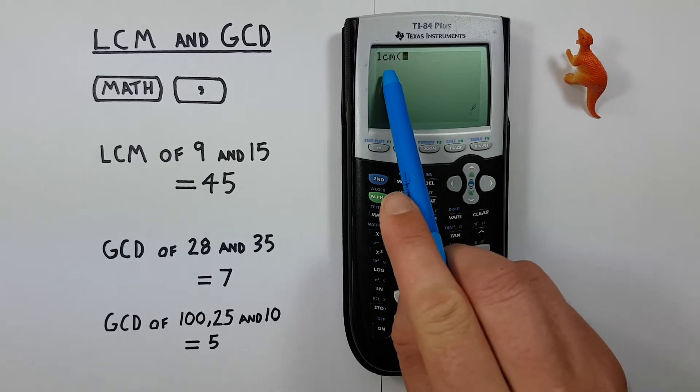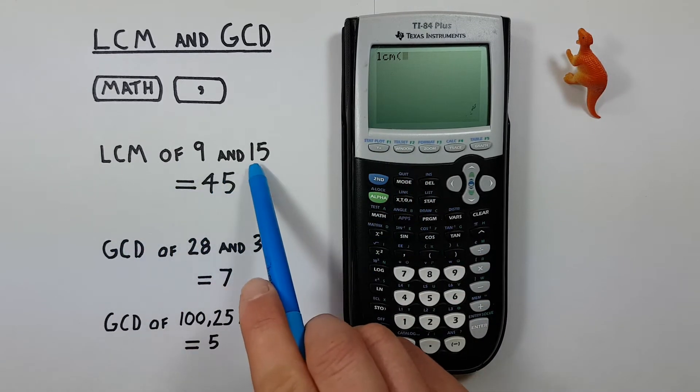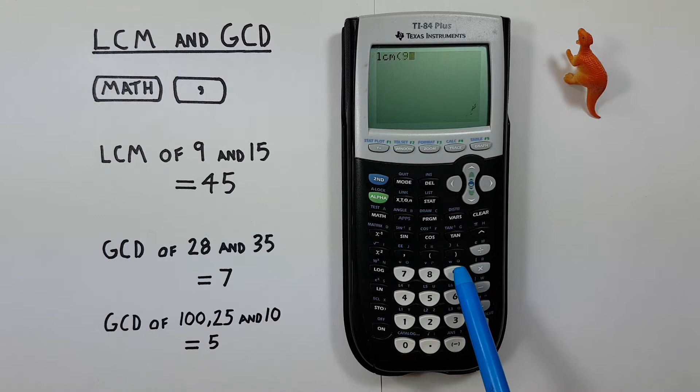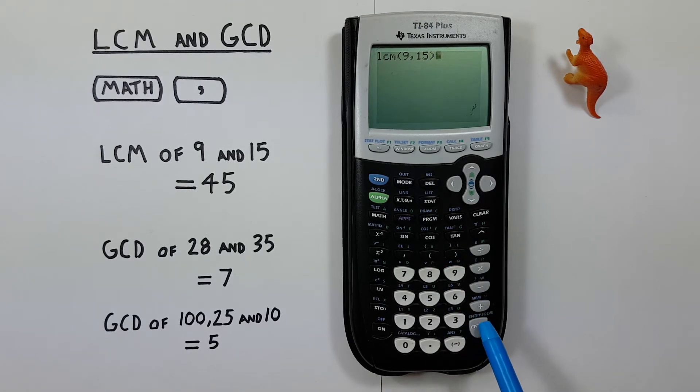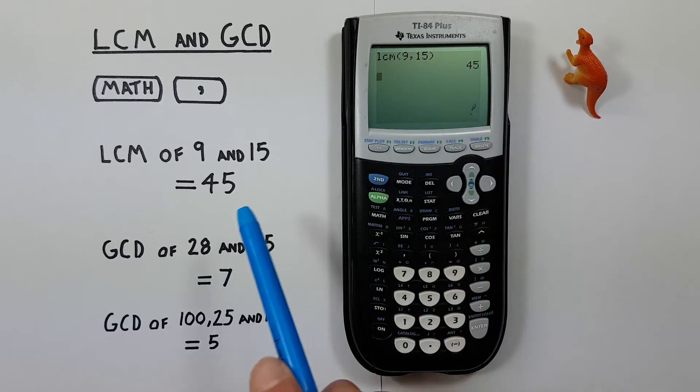Now we have LCM on the screen. Now we wanted to find the LCM of 9 and 15, so we enter the 9, then the comma, and then 15, and then close our brackets, and press enter. And we see we get a result of 45, which is correct.